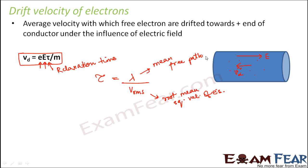What is mean free path? It is the average distance travelled by an electron between two successive collisions — whatever distance it travels between two collisions, that is the mean free path. Now, normally as temperature increases and the environment is heated up, the rms velocity also increases, and as a result the relaxation time reduces. So as temperature increases, rms velocity increases because the mobility of particles increases, and since they are inversely proportional, tau decreases.